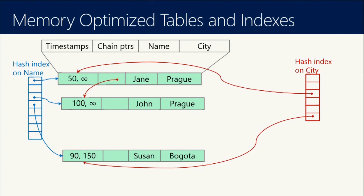A few key things to keep in mind: you always need indexes to get to your rows — those are the basic entry points. You cannot do a table scan without an index; we always do an index scan. Second, these hash indexes are always fixed length. You need to specify a bucket count when you create the index, and it will always have this number of buckets, pre-allocated, through the lifetime of the table — regardless of how many rows you have. Usually between one and two times the number of rows is recommended, to avoid collisions.